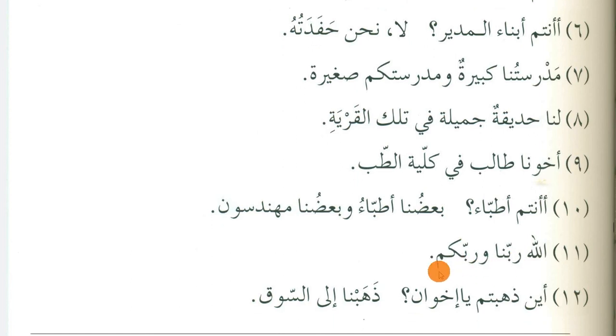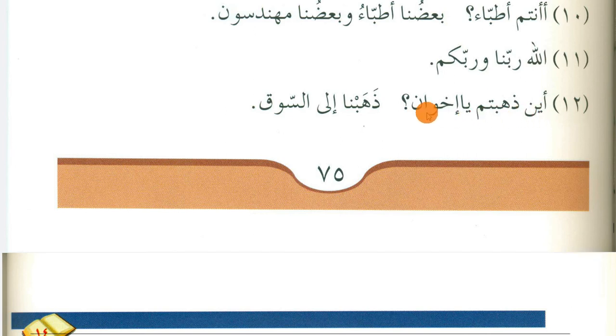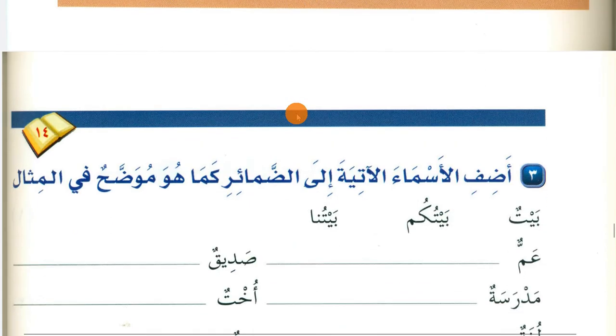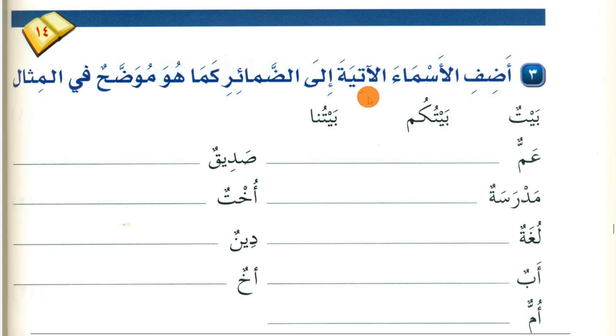Allahu rabbuna wa rabbukum — Allah is our Lord and your Lord. Aina dhahabtum ya ikhwan? — Where did you all go, O brothers? Dhahabna ila al-suq — We went to the market. Exercise: Make mudaaf the following nouns to the pronouns, as shown in the example. Add pronoun 'kum' (meaning 'you all') or 'naa' (meaning 'we/our').